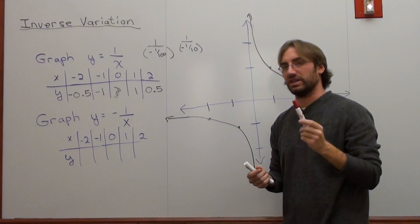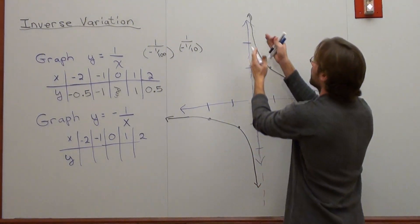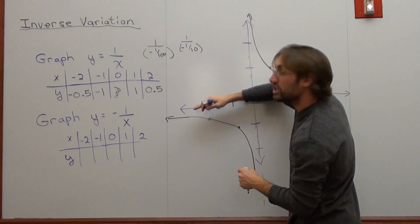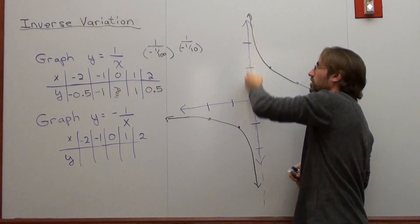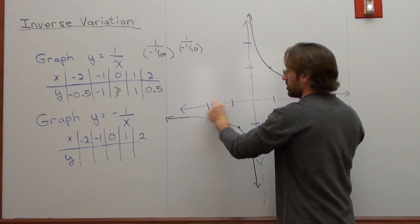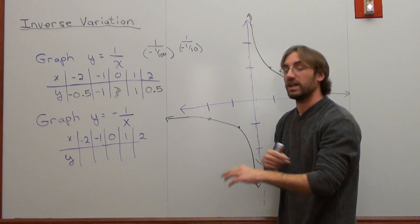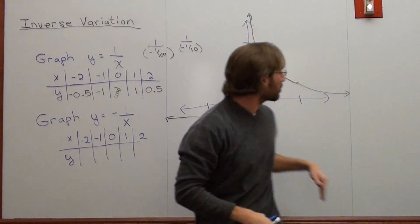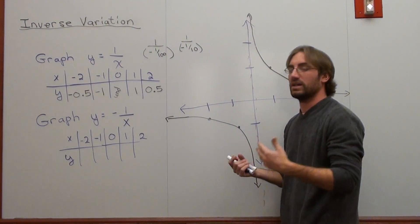What actually happens here is very interesting. This graph will never actually touch the y-axis — that's called a vertical asymptote. It will get infinitely closer and closer this way, infinitely closer and closer that way, but it will never touch. And it will never touch the x-axis either — it will get infinitely closer and closer. Since it never touches the vertical line, that's called a vertical asymptote, and since it never touches the horizontal line, it's called a horizontal asymptote. Basically, an asymptote is like a threshold — you can't cross the line in the sand. You will never cross this line. They're called asymptotes, and that's basically an inverse function in its most simplest form.